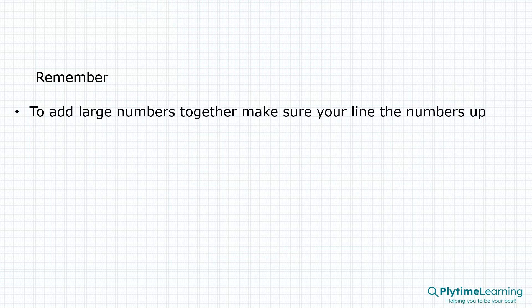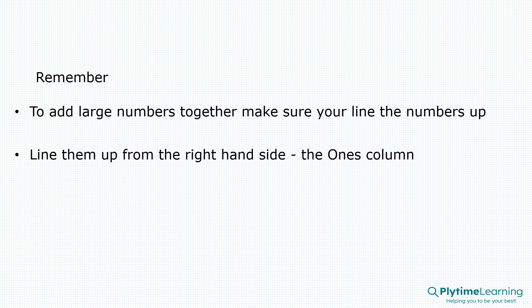Remember, to add large numbers together we need to make sure that we line the numbers up correctly. We line them up from the right-hand side or the ones column. Then, starting in the ones column, we add the numbers in each column.